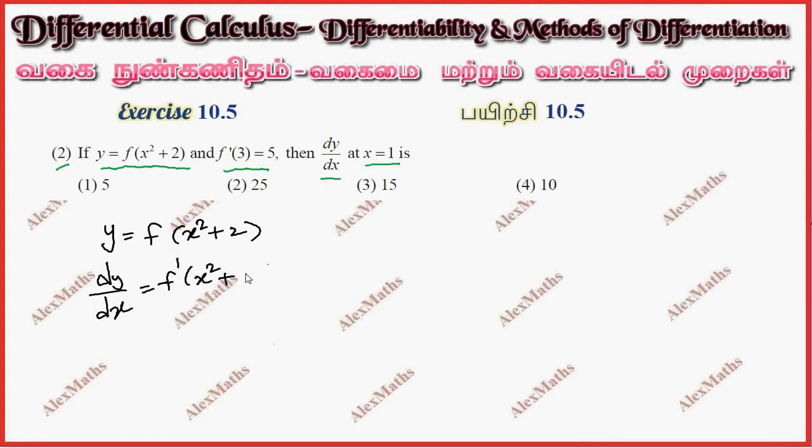So by chain rule, the inner function differentiate, it will come outside. So times the differentiation of x squared, which is 2x, and the constant becomes zero.